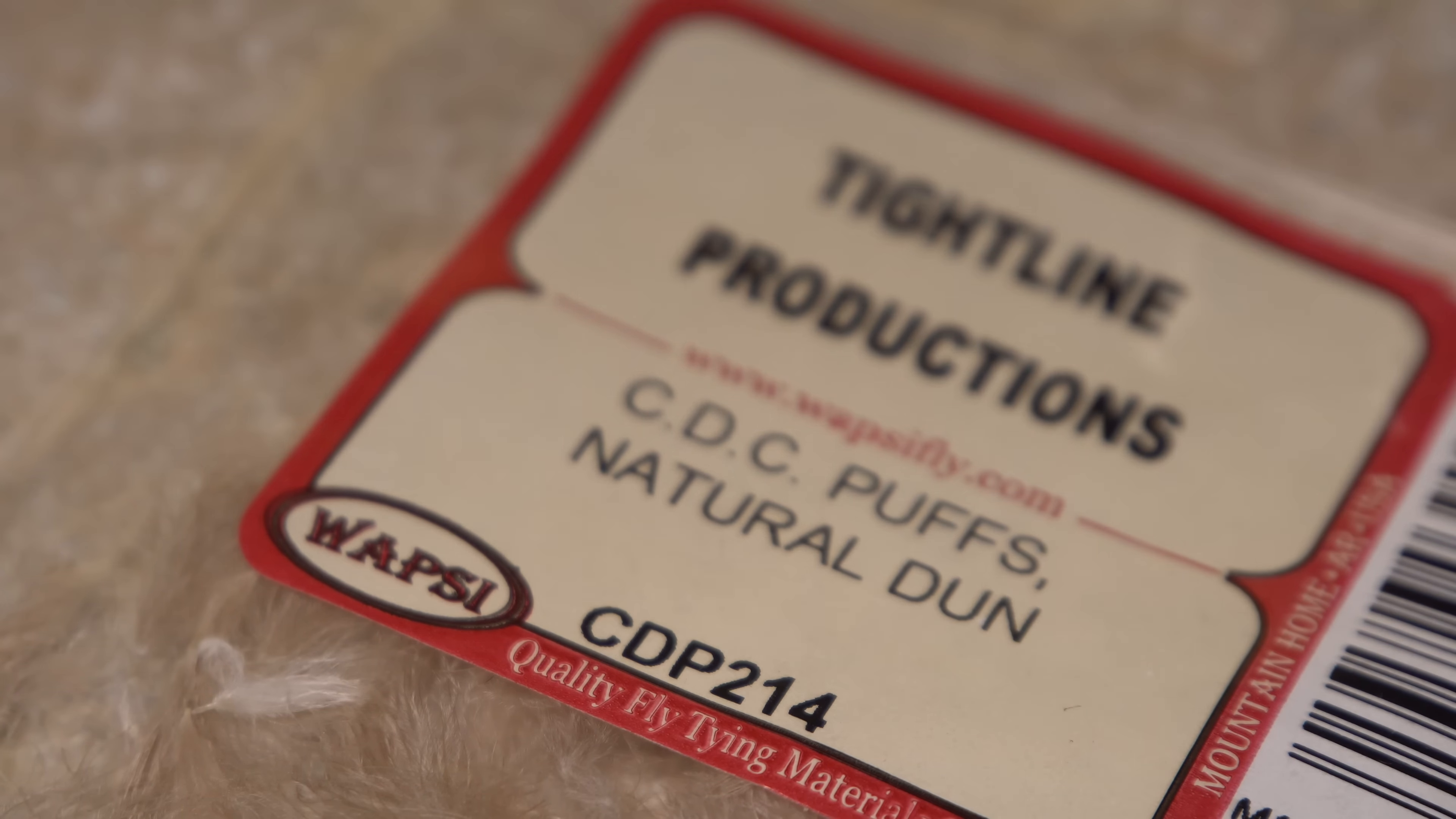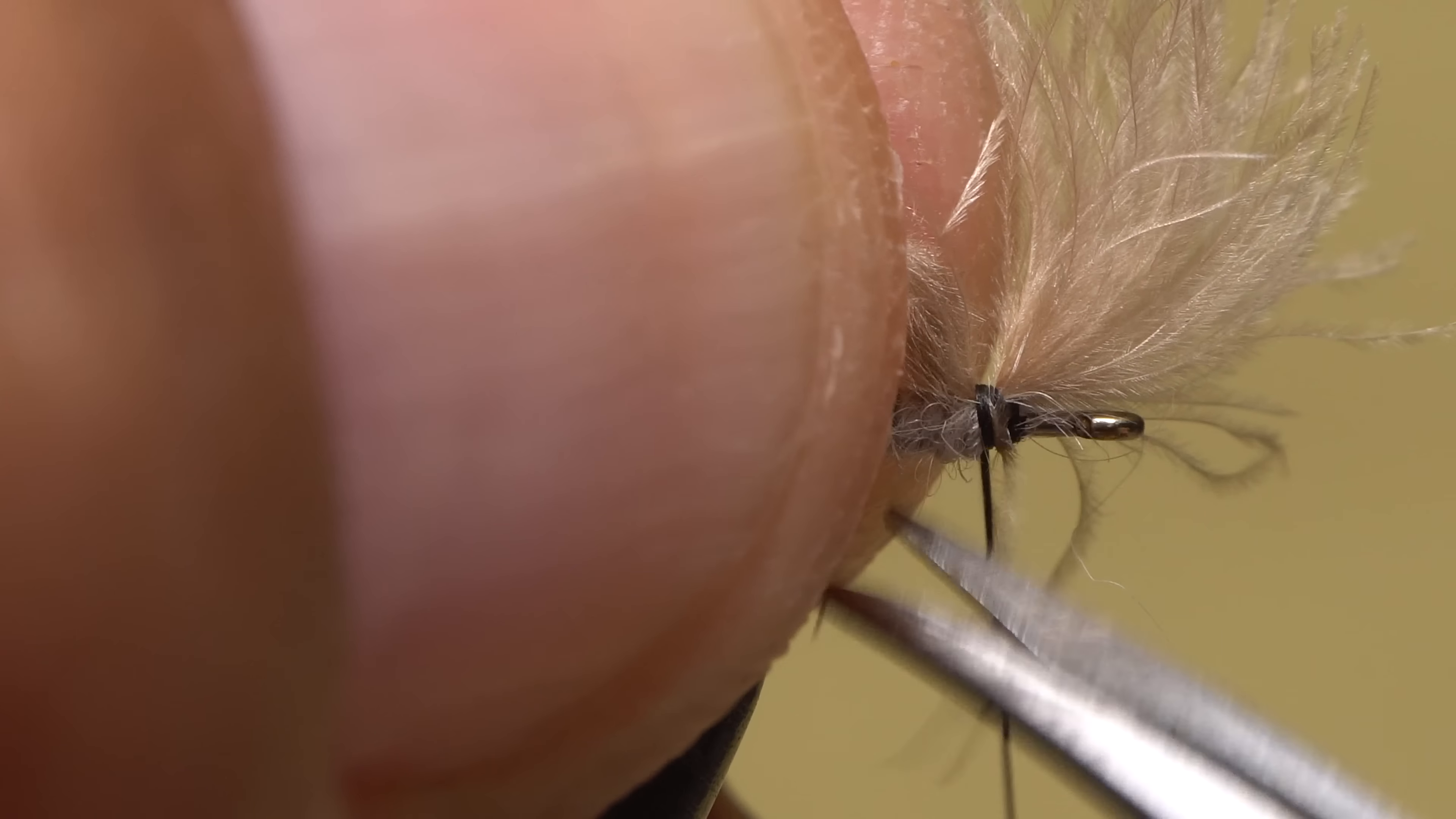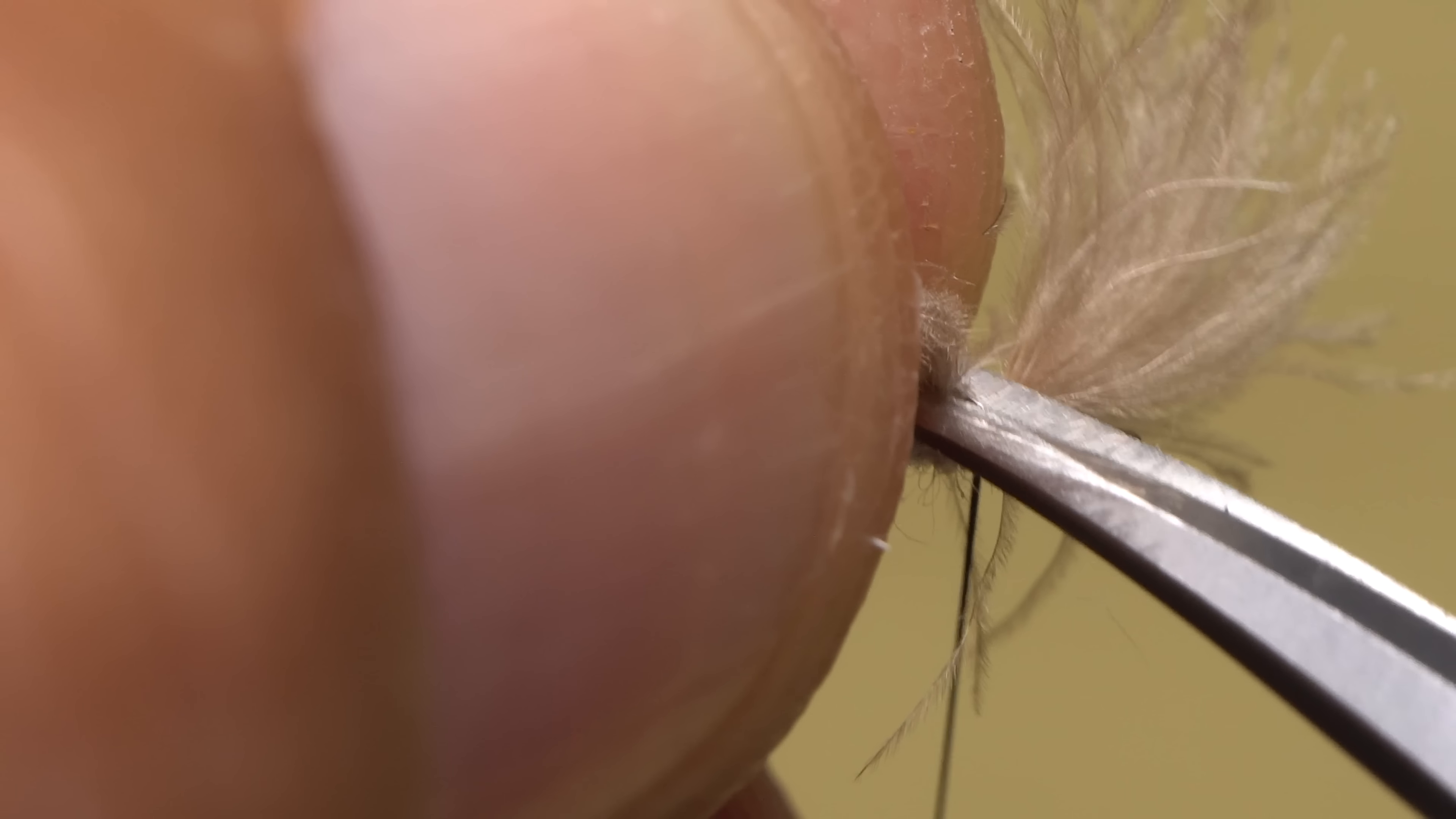Although many materials can be used for the fly's wing, I prefer CDC. Here, a single puff in a natural dun color. Place the puff with its tips pointing forward on top of the hook shank at the location of your tying thread. Take a couple of thread wraps to secure it.